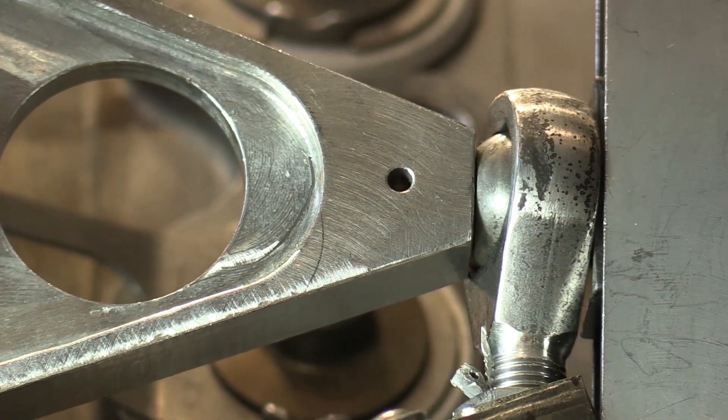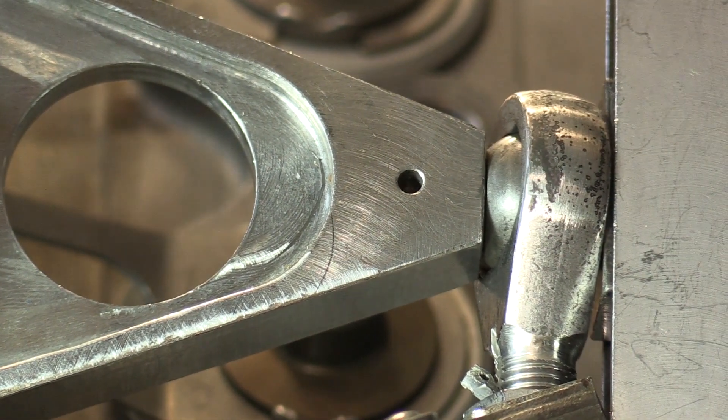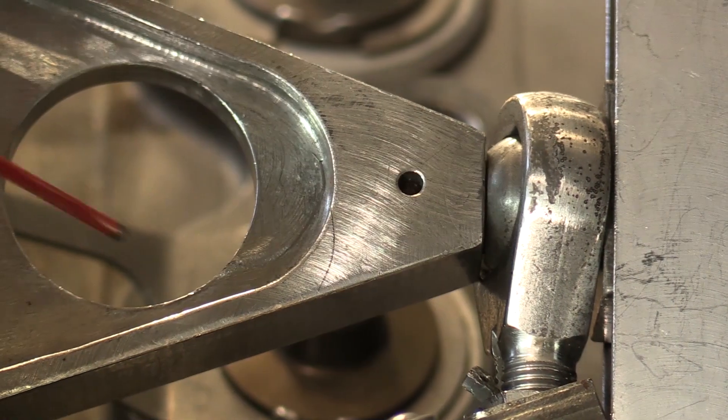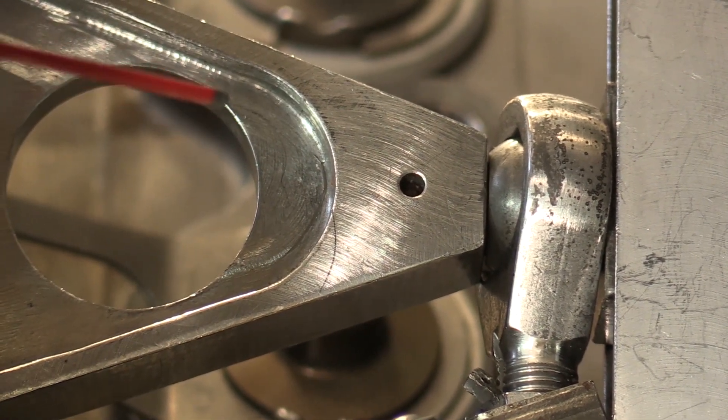So what we're going to do, we've inspected that rod end and now we're just going to put a little bit of the specified lubricant on it. The red application straw, the tip extender, is really good for this.